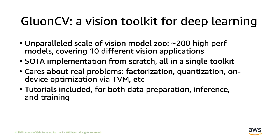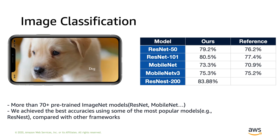Please allow me to go through some of the features in GluonCV. For image classification — the most fundamental problem in CV — it serves as the backbone of other computer vision tasks. In GluonCV, we have an image classification model zoo with more than 70 high-performance pre-trained models, including ResNet, MobileNet, and some of the latest modifications including ResNeXt and ResNeSt. We achieved the best accuracies using the most popular models. Compared with other frameworks, our pre-trained weights have higher accuracy with no speed difference, and we only apply tricks to training so that it's free at inference.